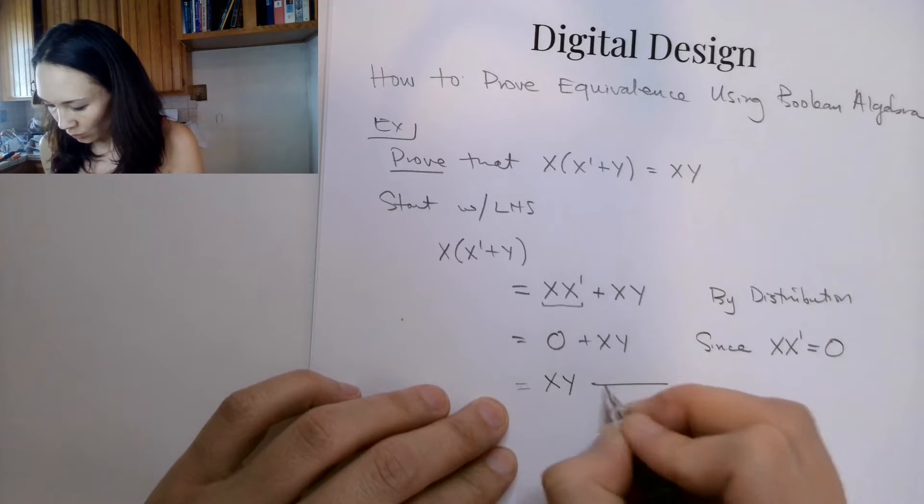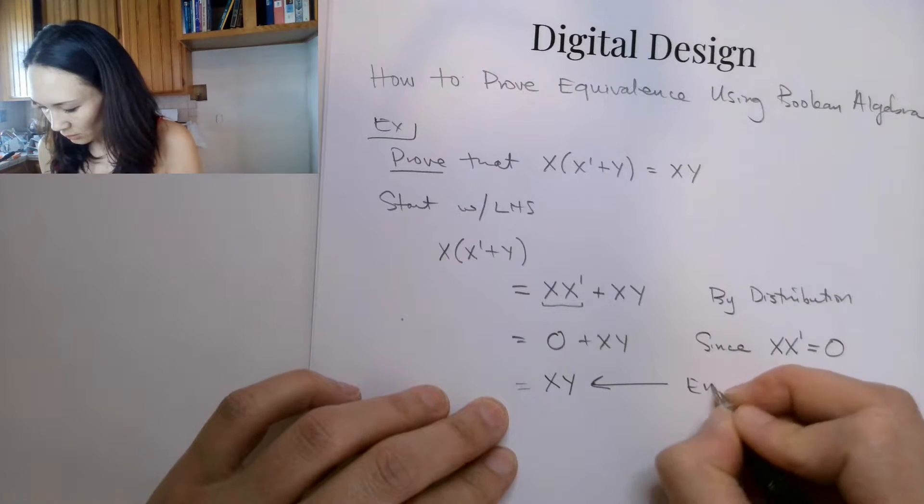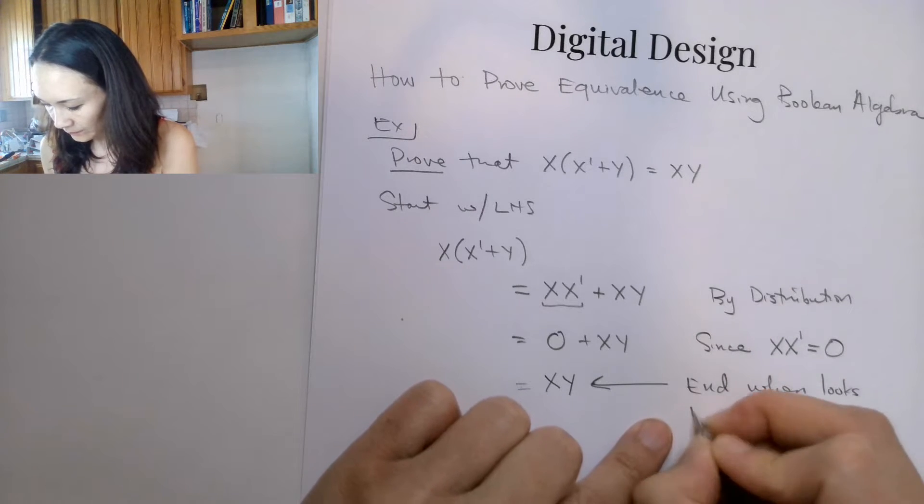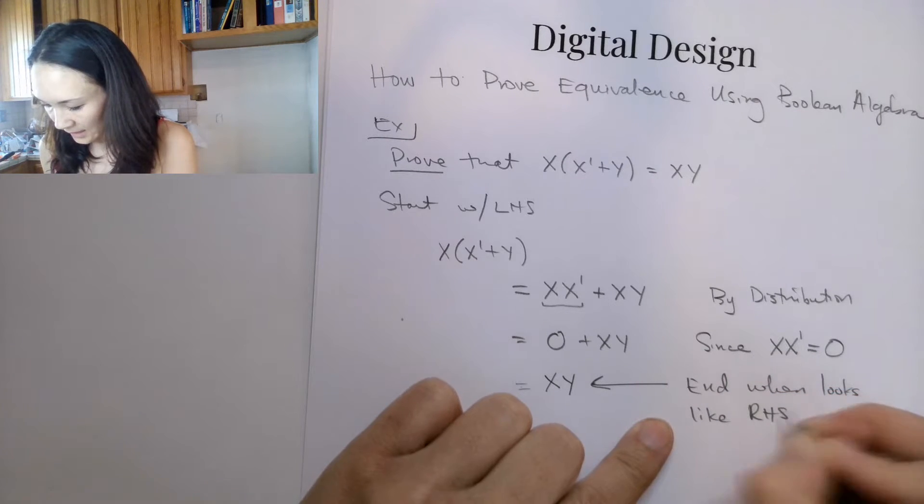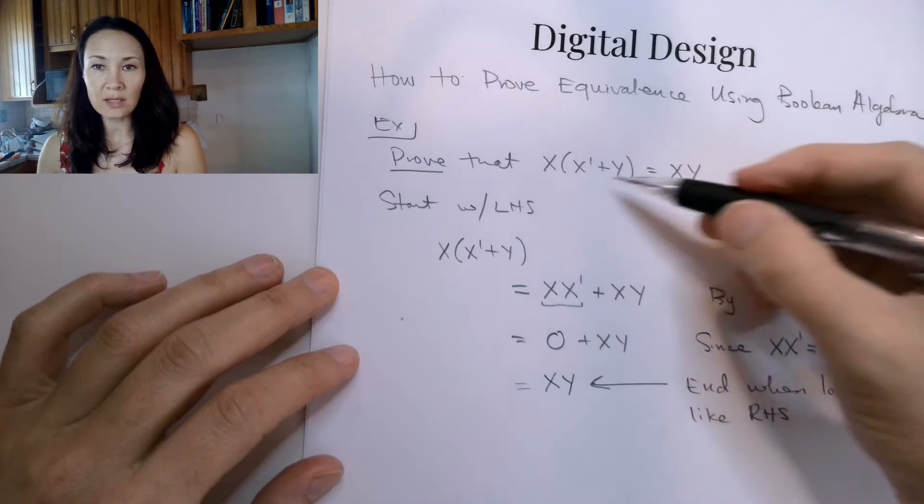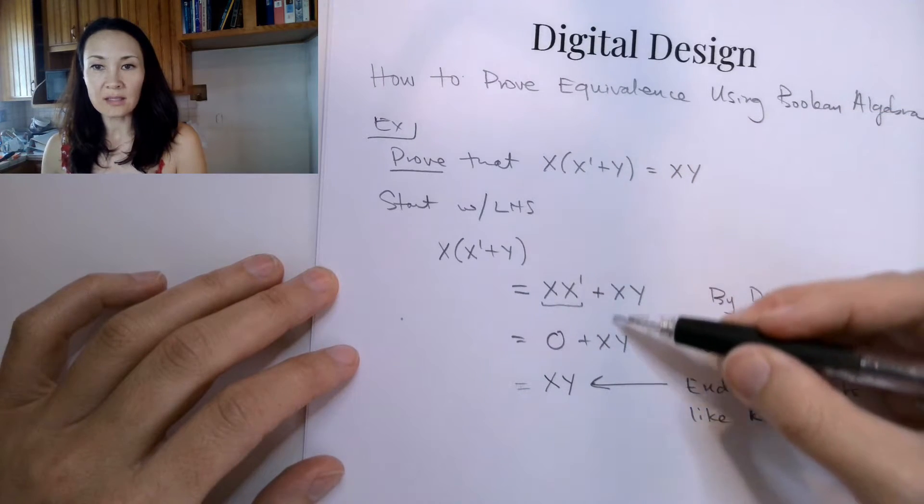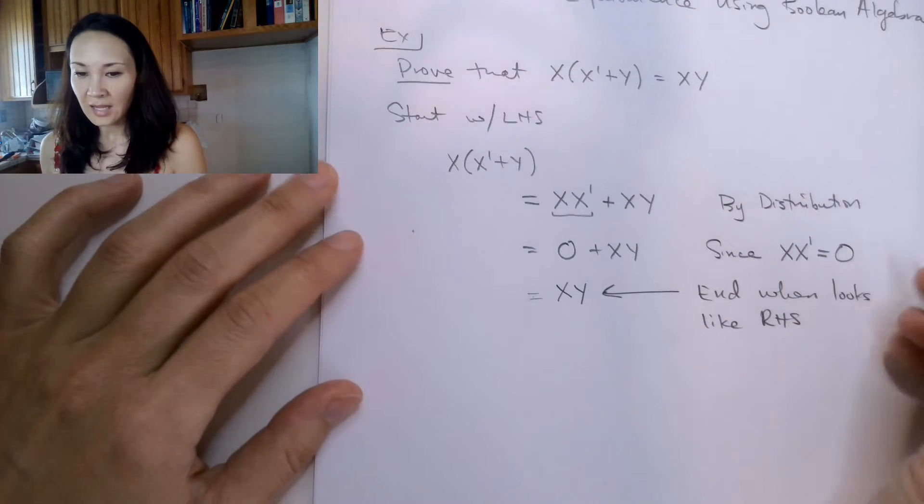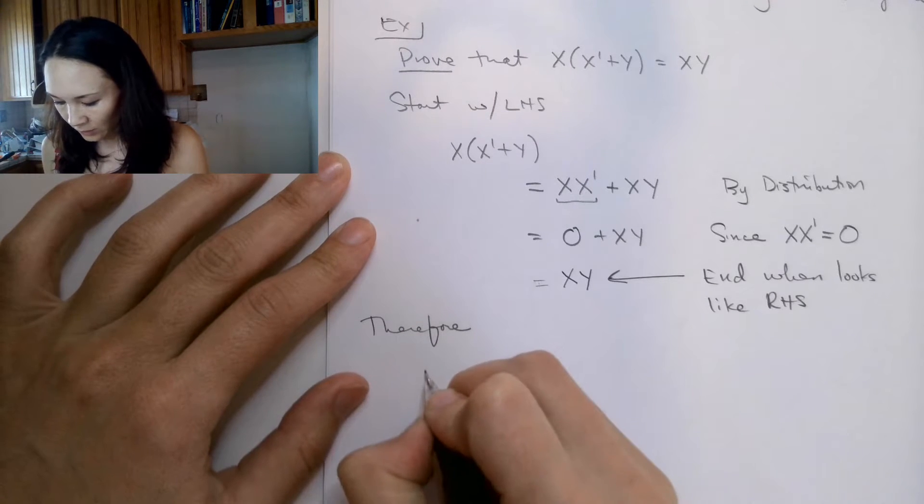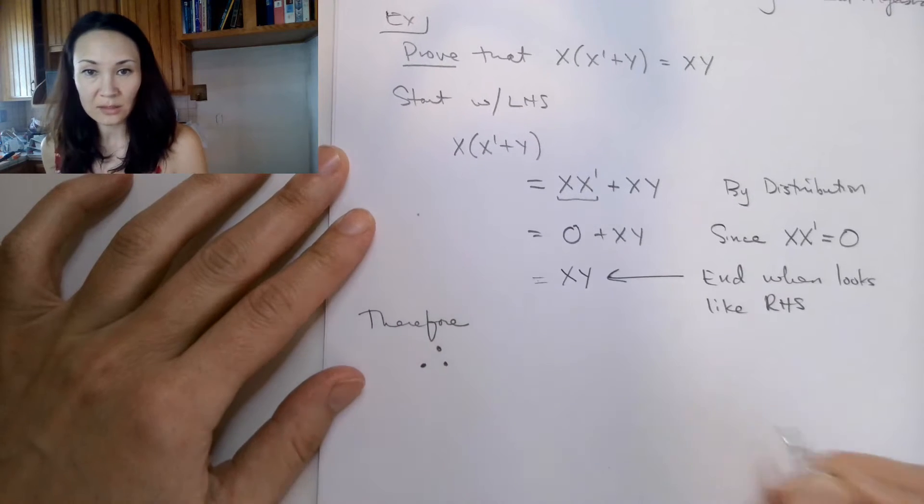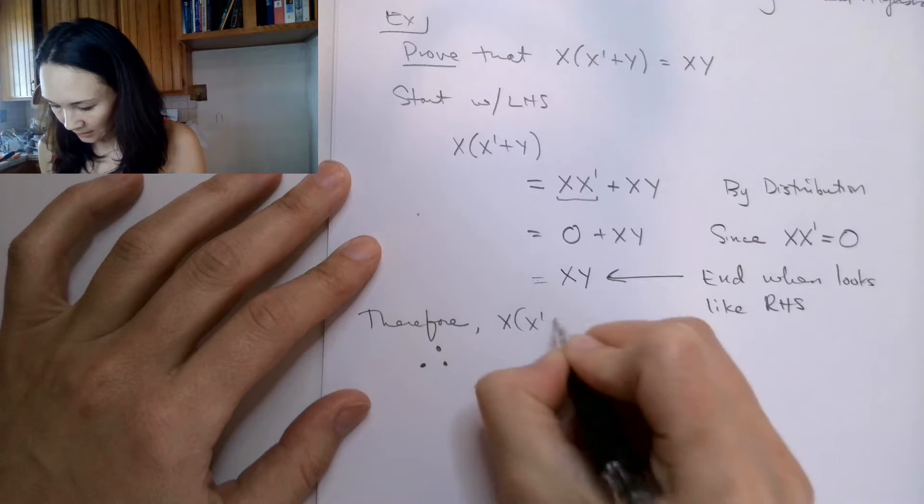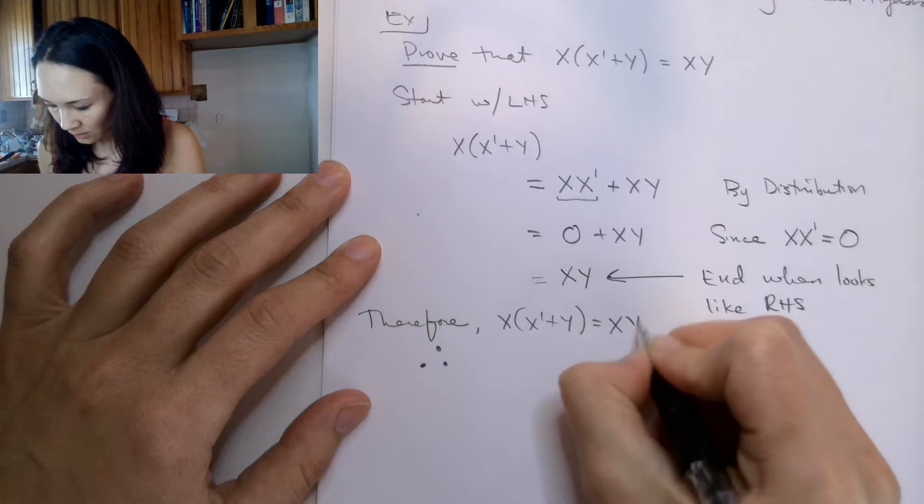And we know we're finished, we end when this looks like the right hand side of what we wanted to prove. So we're not going to touch the right hand side, we're only going to fiddle with the left hand side until it looks exactly like the right hand side. And then if we're feeling fancy, we can say therefore, you can also use this little symbol here, this three dots means therefore, x times x naught or y is equal to xy.